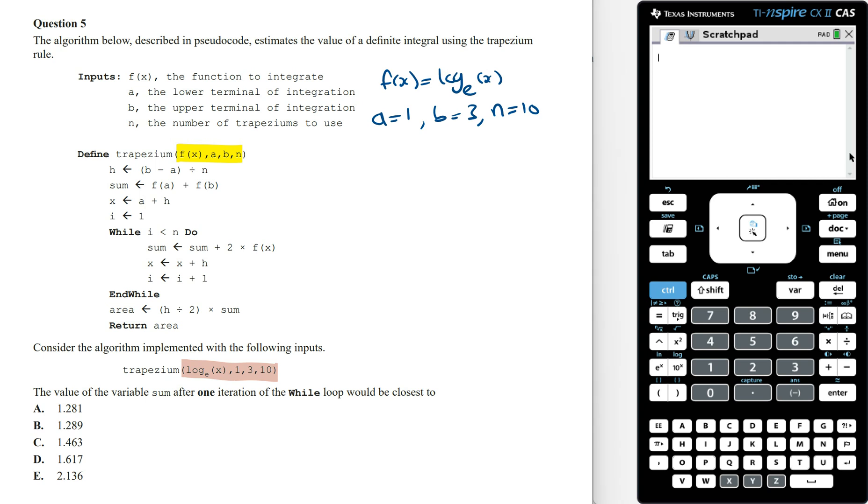From here we just follow the steps. The value of h is b minus a divided by n, which is 3 minus 1 equals 2, then divided by 10, giving us 1/5.